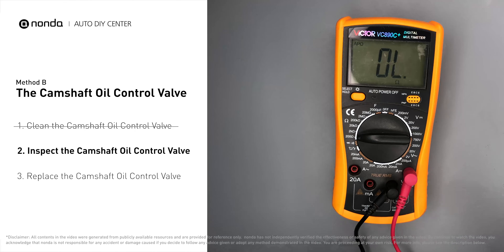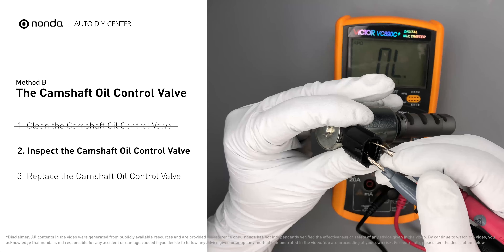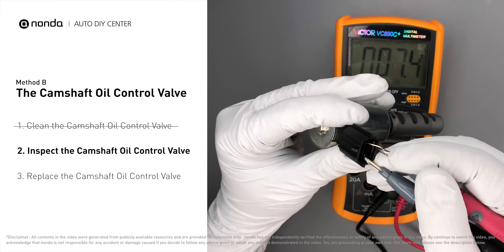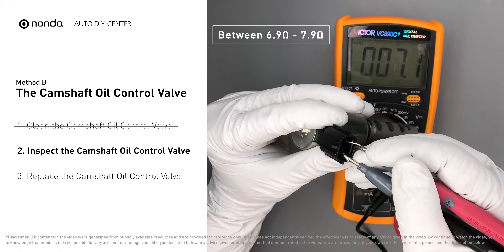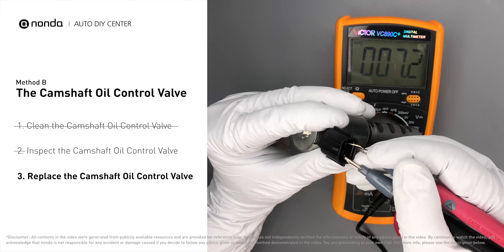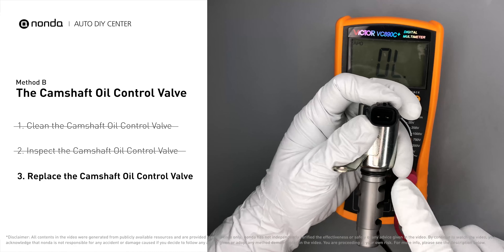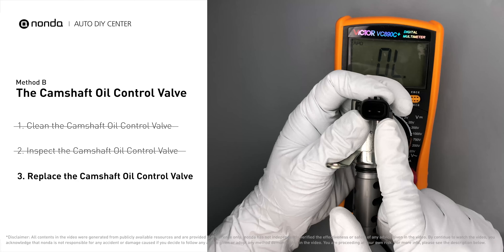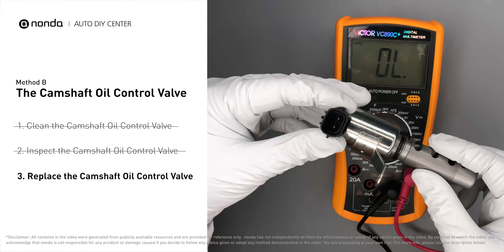At an ambient temperature of 68 degrees Fahrenheit, the valve resistance should be between 6.9 ohms and 7.9 ohms. If you do not get a reading in this range, it indicates that the camshaft oil control valve is faulty and needs to be replaced.